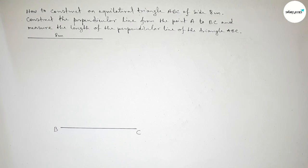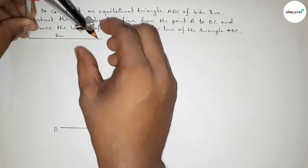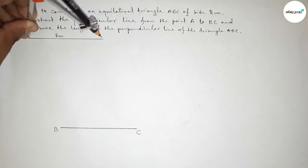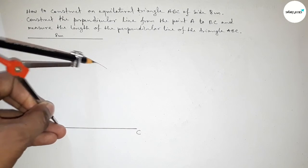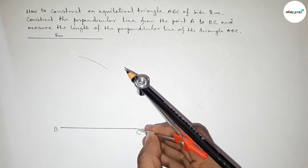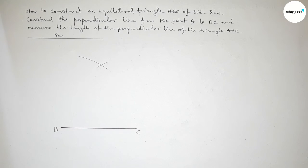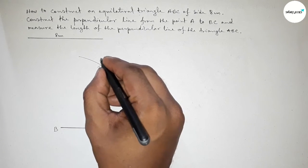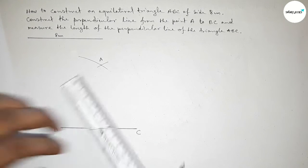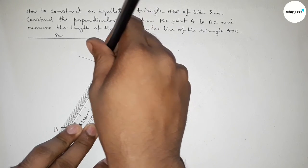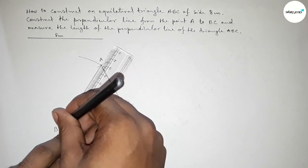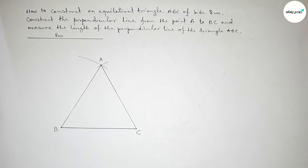Now taking the length 8 centimeter by using a compass. Putting the compass on the point B and drawing an arc here with the same length. Then putting the compass on point C and cutting here, so both curves intersect at a point A. Now joining A and C and joining A and B, so we got an equilateral triangle ABC with each side 8 centimeter.